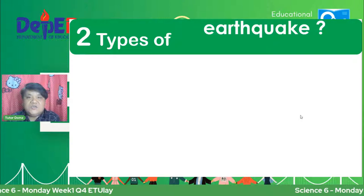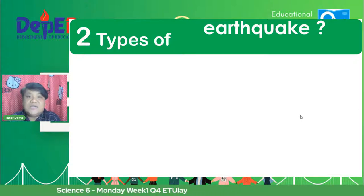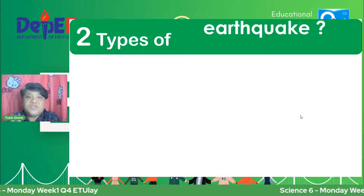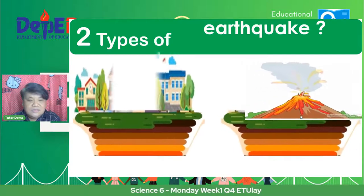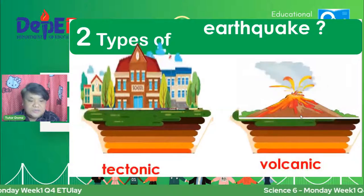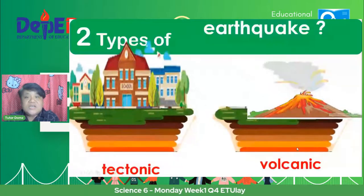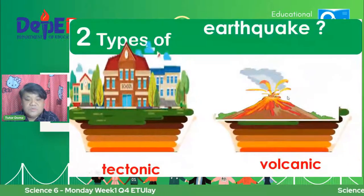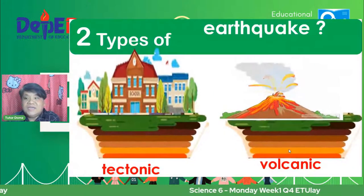Kung maalala ninyo yung earthquake noong nakaraang linggo, I think May 7 yun, nagkaroon ng earthquake. So tingnan natin kung anong dahilan bakit nagkaroon ng earthquake. There are two types. Pag sumabog yung vulkan, magkakaroon ng earthquake. So isa-isayin natin yung dalawang klase ng earthquake.